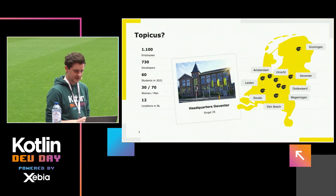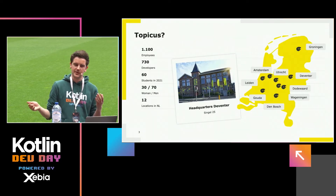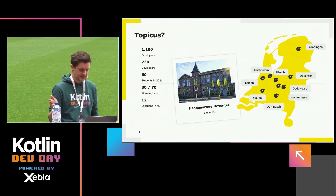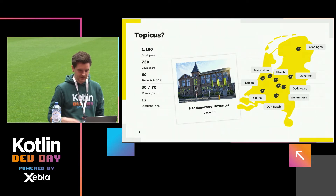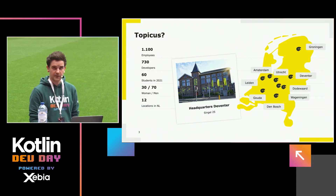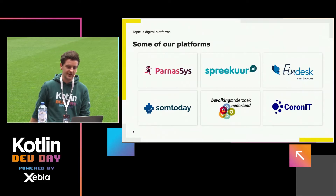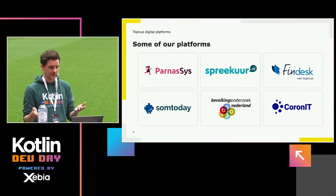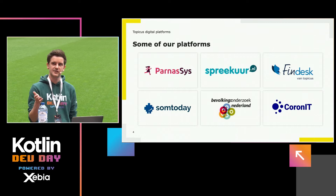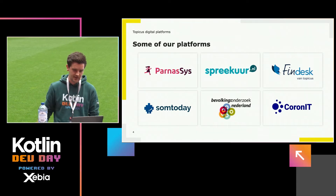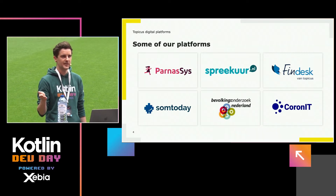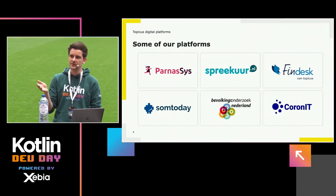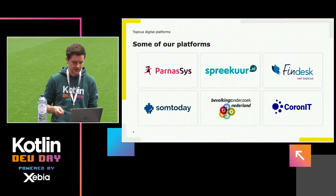A bit about Topicus. Topicus is a software development company around the size of 1,100 employees with offices throughout the Netherlands, multiple cities. We built multiple platforms, so maybe you know us in education, for example student tracking systems Parnassus or Sontede, but also in healthcare.